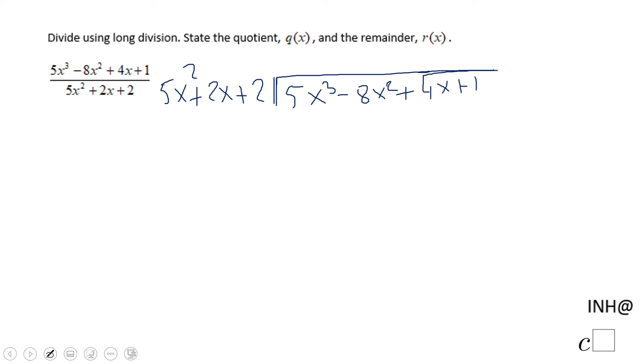What should I multiply 5x squared to get 5x cubed? And that is x. x times 5x squared is 5x cubed. x times 2x is 2x squared. x times 2 is 2x.